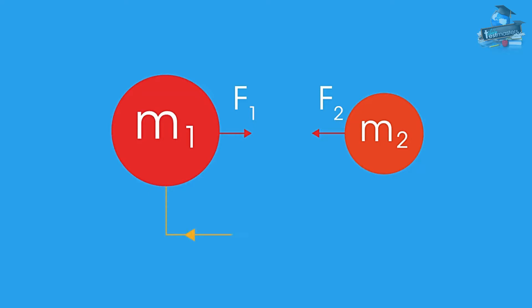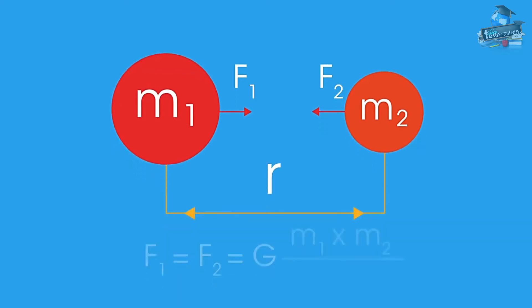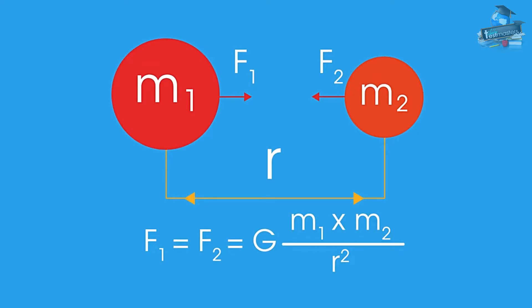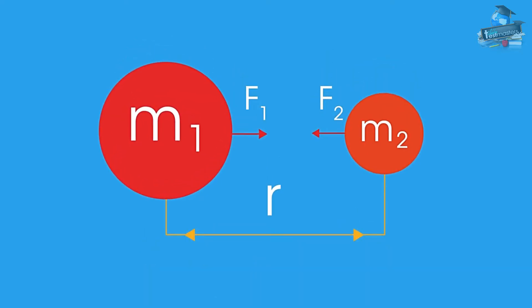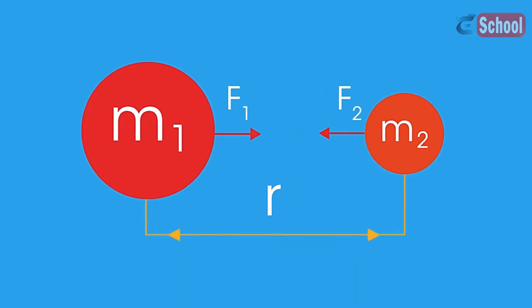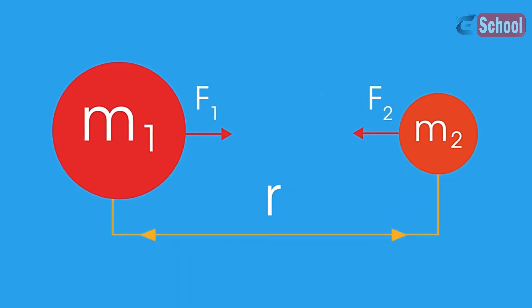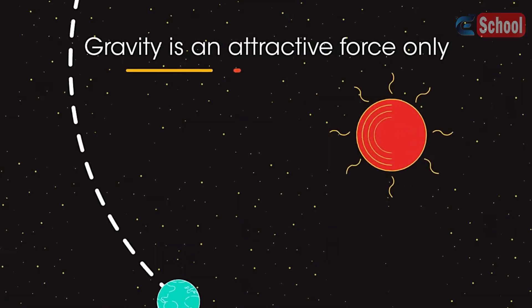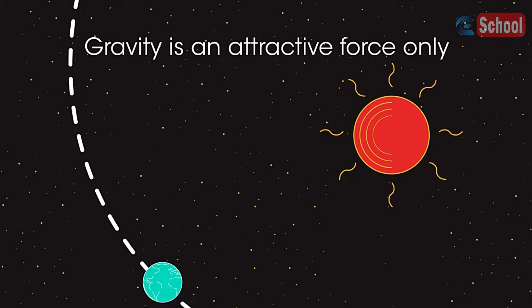And drops off by the square of the distance r between them. So for example, doubling the mass of one of the objects also doubles the force of gravity experienced, but doubling the distance between the two objects results in the force being reduced to one quarter of the original value.